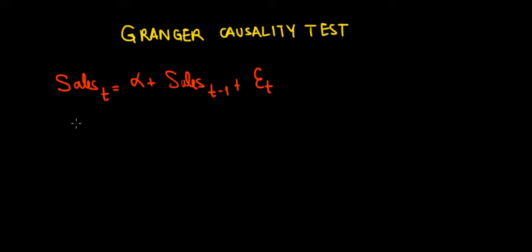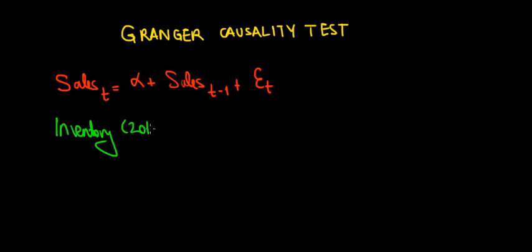Let's be practical and give an intuitive example. Suppose we are a fashion store and we take into account the inventory level of our clothes. What would be the effect of inventory levels of clothes in 2015 on sales in 2016?